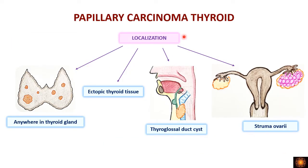Regarding localization, papillary carcinoma can occur anywhere in the thyroid — in any lobe or the isthmus. It can also occur in ectopic thyroid tissue, meaning thyroid tissue present anywhere else in the body outside the thyroid gland.